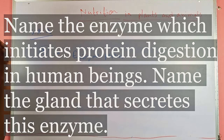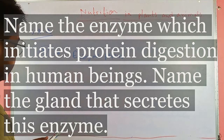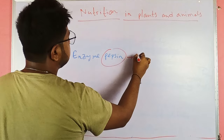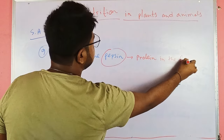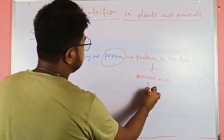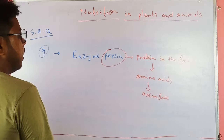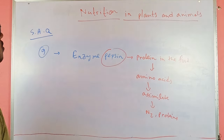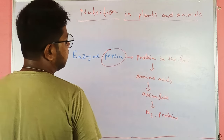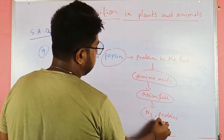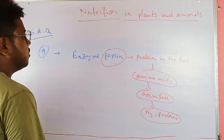Which enzyme first initiates digestion? The enzyme pepsin breaks down proteins in food to form amino acids, helping assimilate the proteins and nitrogen in the body. So pepsin first starts degrading the protein present in food to form amino acids.